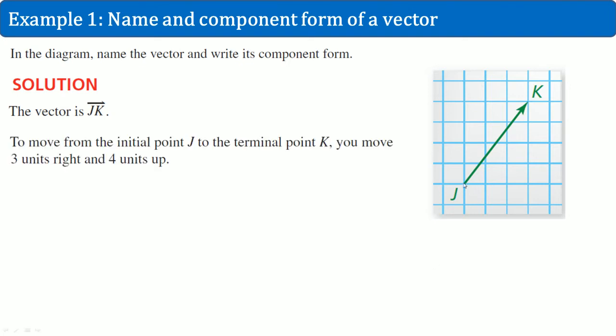So let's count. From J to K, how much do we go in the X direction? One, two, three. Then in the Y direction, one, two, three, four. So we could say the component form is bracket three comma four close bracket.